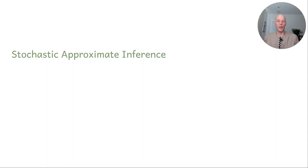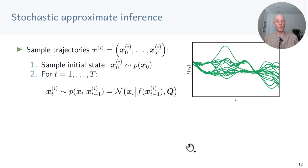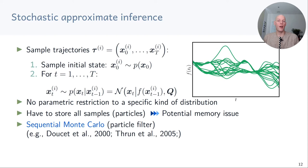Having gone through linearization and the unscented transformation as examples of deterministic approximate inference, let's now look at stochastic approximate inference. The main idea is to sample trajectories. To generate a trajectory sample, we first draw a sample from the initial distribution and then iteratively draw a sample from the distribution of the next state given the sample at the current state. On the right-hand side we see examples of these trajectory samples generated using this procedure.